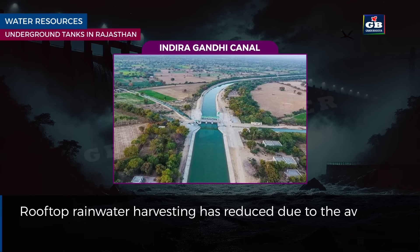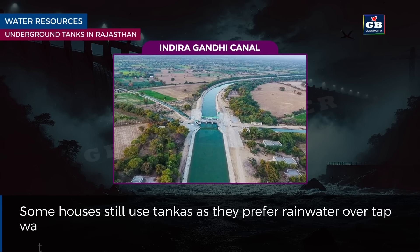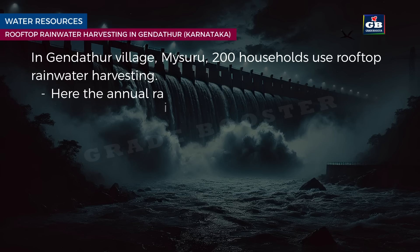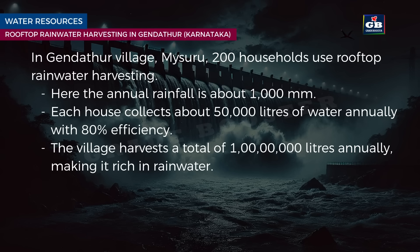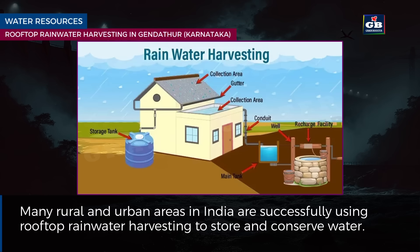Rooftop rainwater harvesting has reduced due to availability of water from the Indira Gandhi Canal, though some houses still use tankas as they prefer rainwater over tap water. In Gendatur village, Mysore, Karnataka, 200 households use rooftop rainwater harvesting. The annual rainfall is about 1000 mm, and each house collects about 50,000 litres of water annually with 80% efficiency, so the village harvests a total of 1 crore litres annually. Many rural and urban areas in India are successfully using rooftop rainwater harvesting to store and conserve water.